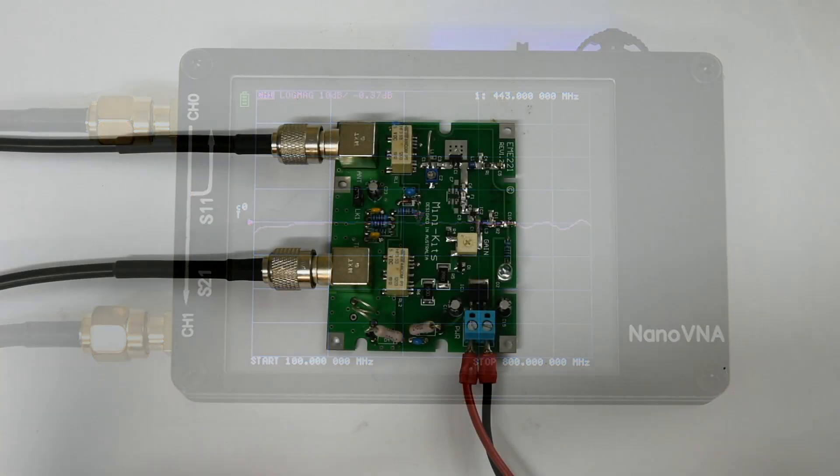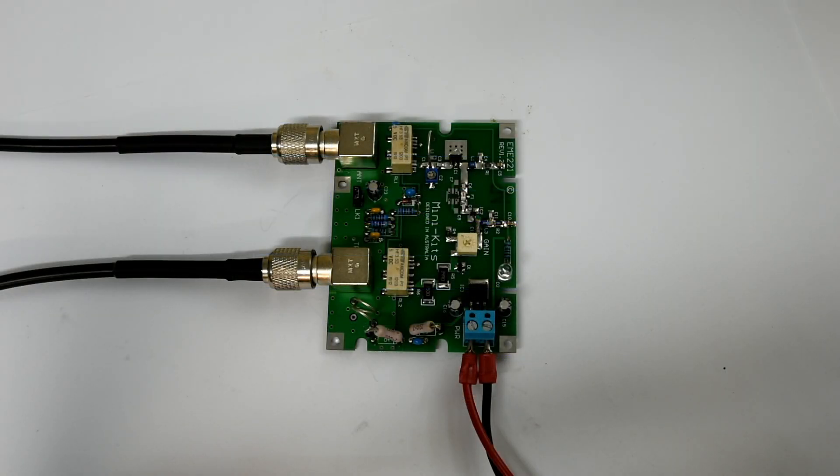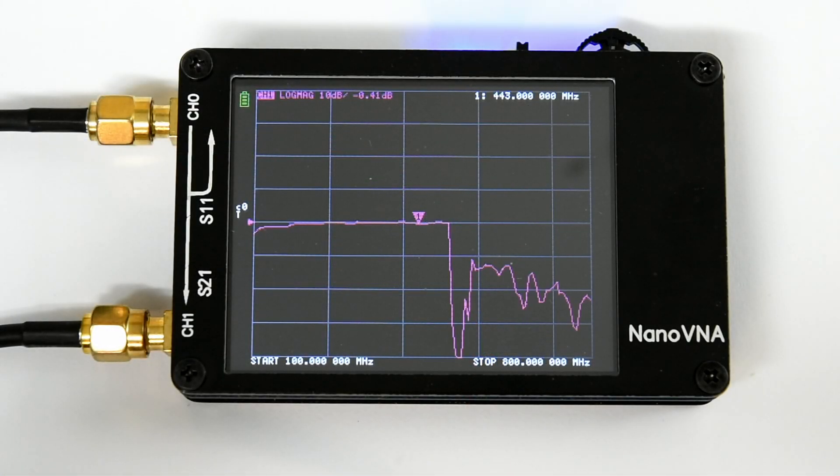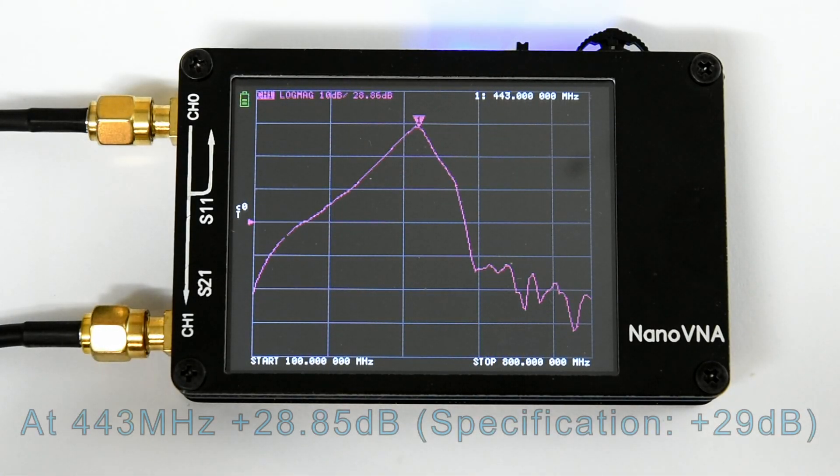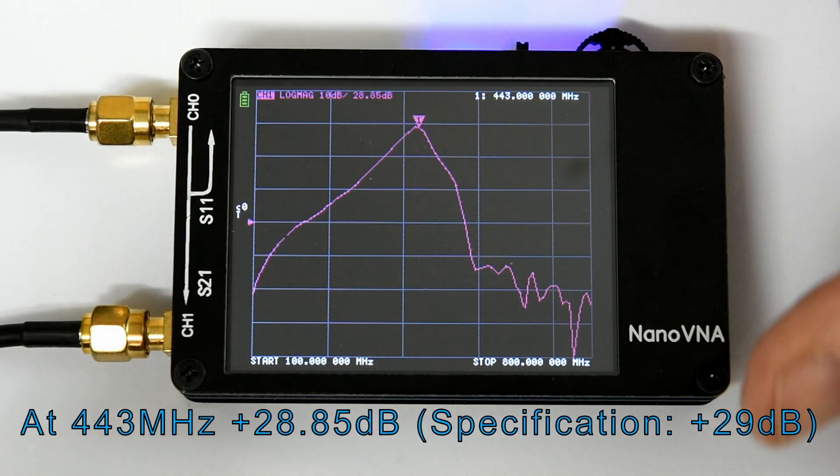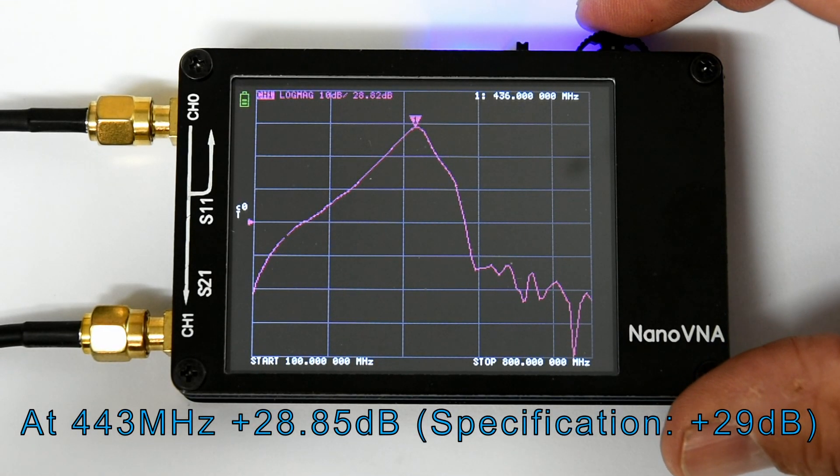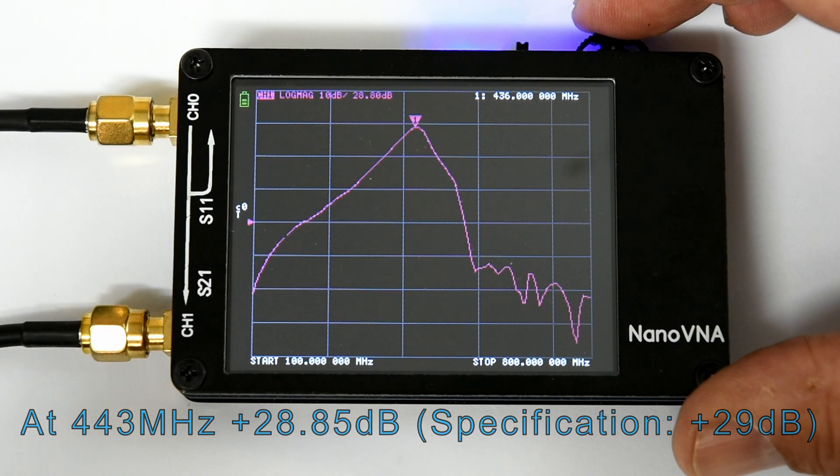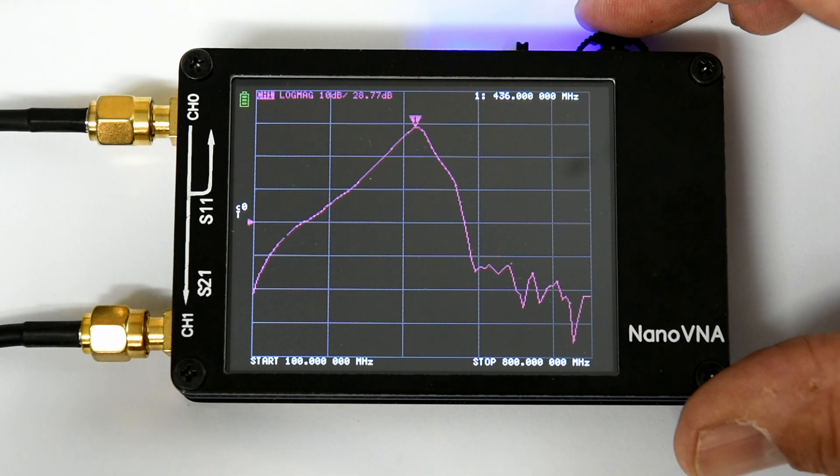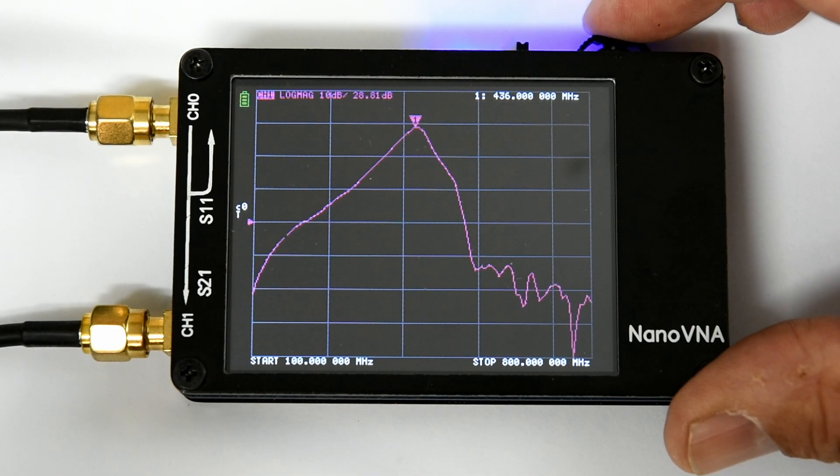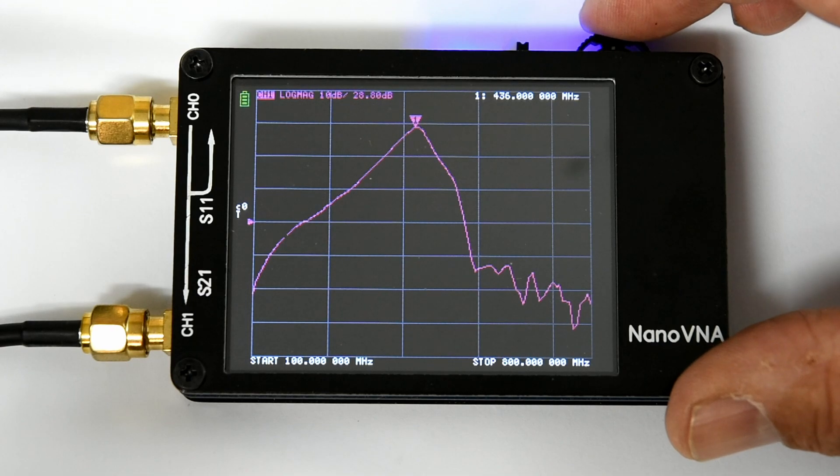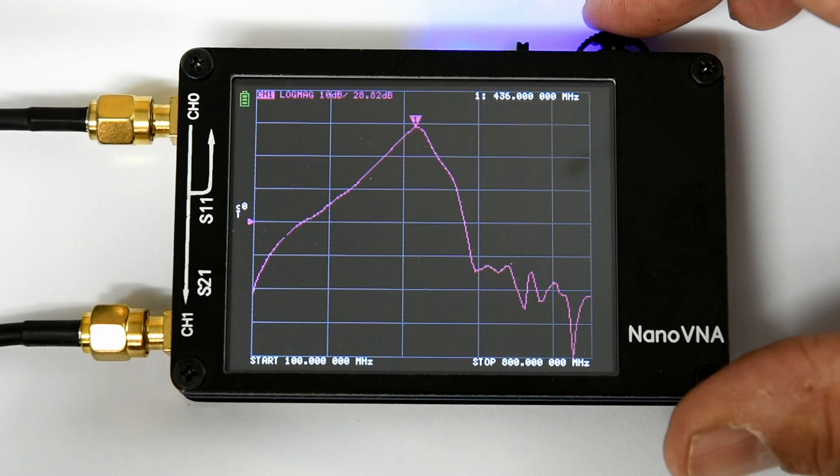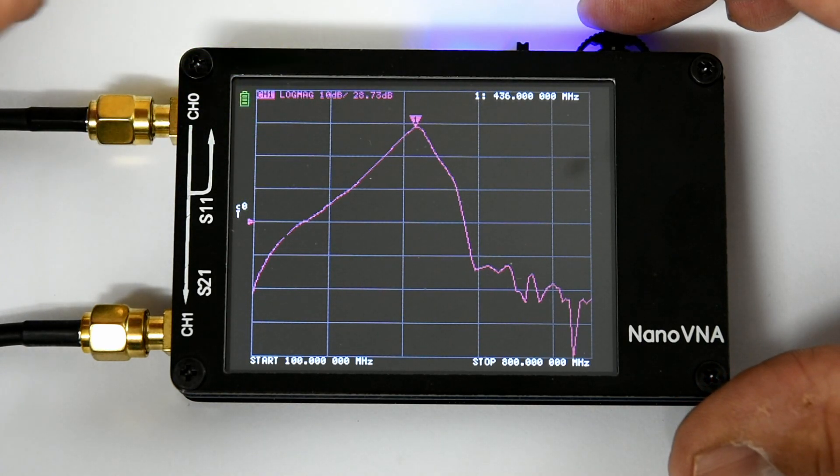So we're going to power the amplifier up. The 12 volts is applied. And there we have it. We've got 28, very close to 29 dB. Which is exactly what the spec sheet says it should be. And I'm fairly happy with it having peaked at around 436 megahertz. Which is almost where we want it exactly. It is where we want it exactly.